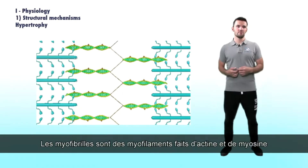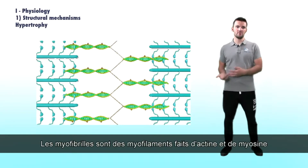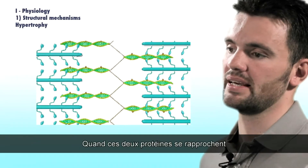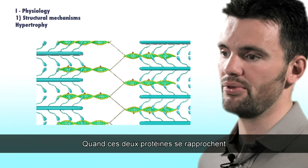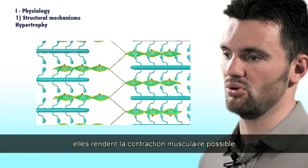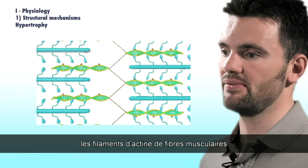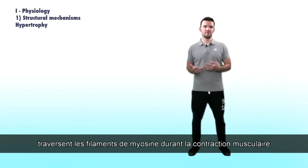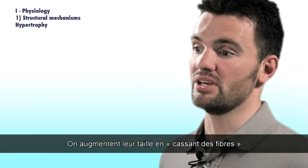Myofibrils are myofilaments made of actin and myosin. When these two proteins get closer to each other, they make muscle contraction possible. The actin filaments of muscle fibers slide past the myosin filaments during muscle contraction.